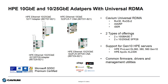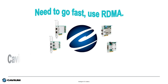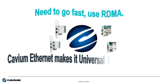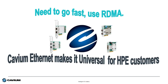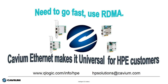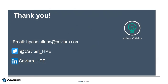So in summary, if you need to go fast, use RDMA, and Cavium Ethernet makes RDMA universal for HPE customers. The bottom line is I/O matters, and Cavium makes it matter for HPE. Thanks for your time and attention, and I hope you have a wonderful rest of your day.